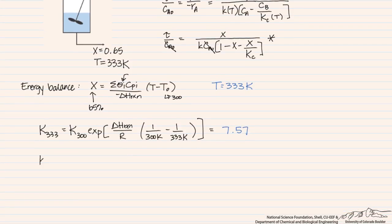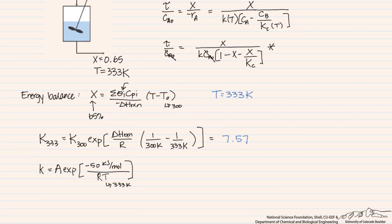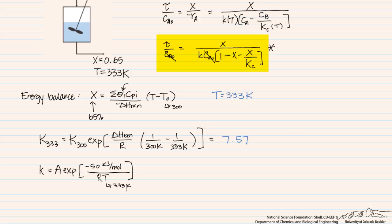For the rate constant, we're not given the pre-exponential factor, so we'll leave it as A for now and see if it cancels. We are given the activation energy of 50 kJ/mol. Dividing by R·T using R = 8.314×10⁻³ kJ/mol·K gives us k as a function of temperature. We insert this expression for k into our starred material balance equation to get a substituted expression for τ.